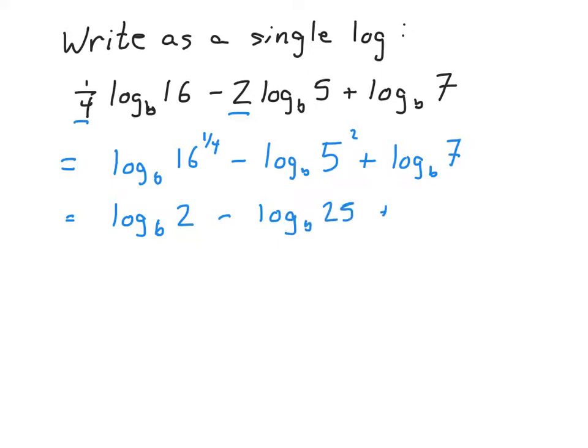And I can bring down the third term, log base b of 7. Now I'll use the quotient and product rules to combine these three terms. Remember that the difference of two logarithms is log of the quotient, so combining just the first two terms, we get log base b of 2 over 25, which is added to log base b of 7.